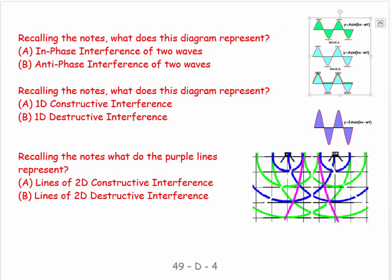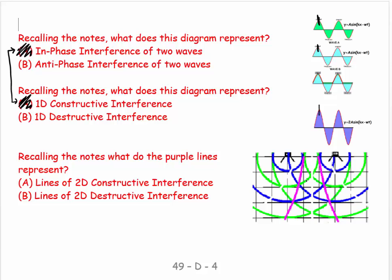Let's have a look at some questions. What does this diagram represent? We have a crest occurring with a crest, giving twice the amplitude with the same frequency — that's in-phase constructive interference of waves. What does this other diagram represent? The choices are constructive and destructive interference — this is constructive interference. What do the purple lines represent? These are lines where a crest in blue corresponds to a trough in green for ripples on water — destructive interference in two dimensions.